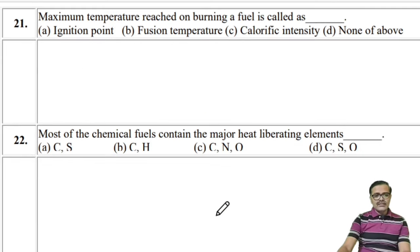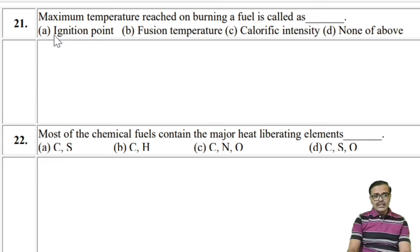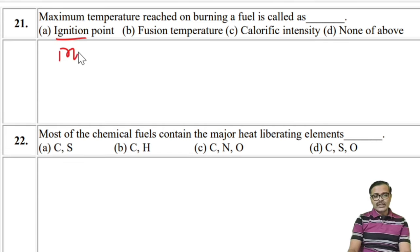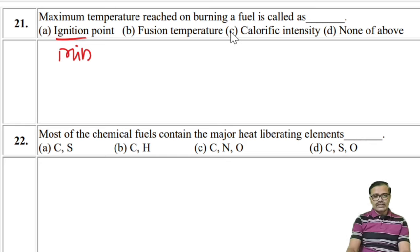The maximum temperature reached on burning a fuel is called calorific intensity. Ignition temperature is the minimum temperature, not maximum. Fusion means melting temperature. Calorific intensity is the correct term for maximum temperature — so that is the right option.